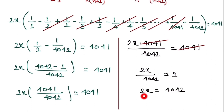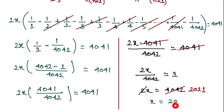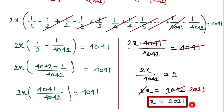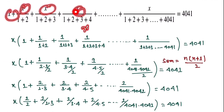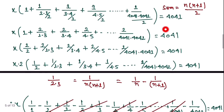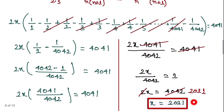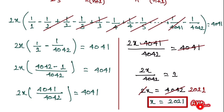The 4041s cancel from both sides, leaving 2x = 4042. Dividing both sides by 2: x = 2021. So the value of x is 2021 — this is our final answer. When we substitute x = 2021 back into the original equation, it holds true. Thank you so much for watching! If you liked the video, please subscribe to the channel.